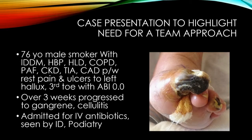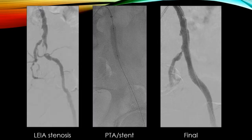I'm going to start off with a very typical patient that illustrates and highlights the need for a team approach. This was a 76-year-old male smoker with insulin-dependent diabetes — all the usual and typical risk factors — who presented with rest pain and ulcers to the left hallux and third toe with a flat ABI. Not surprisingly, he progressed over a very short period of time to frank gangrene and cellulitis, and he was admitted for IV antibiotics and seen by our ID and podiatry folks, two valuable members of our team.